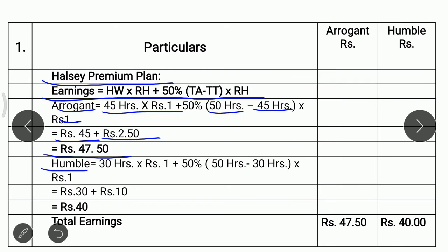In case of Humble, he works 30 hours at Rs. 1 per hour, giving Rs. 30. Plus 50% of (50 − 30) = 50% of 20 hours = Rs. 10. So 30 plus 10, earnings of Humble is Rs. 40. According to the Halsey Premium Plan, earnings of Arrogant is Rs. 47.50 and Humble is Rs. 40.